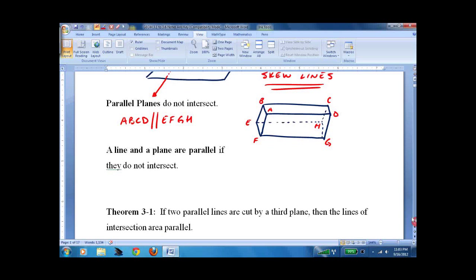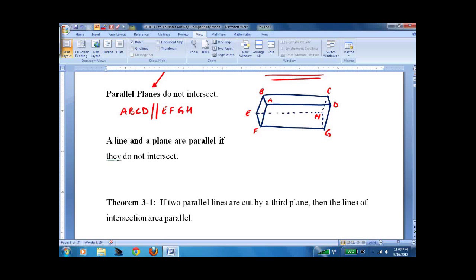We could also use this diagram for the next one. A line and a plane are parallel if they do not intersect. So we would say ABCD is parallel to EF.